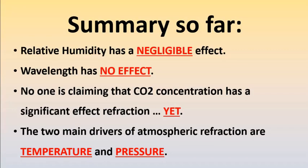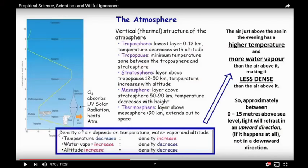Summary so far: relative humidity has a negligible effect on refraction, wavelength has basically no effect, and no one's claiming CO2 concentration has a significant effect. So the only two factors that remain are temperature and pressure. Let's apply all this to Dr. John's observation from Worthing Pier across to Brighton, to figure out whether he has an upwardly refracting inverted density gradient or a normal downwardly refracting density gradient. Given that we've ruled out relative humidity and wavelength, the only real drivers of atmospheric refraction are temperature and pressure.